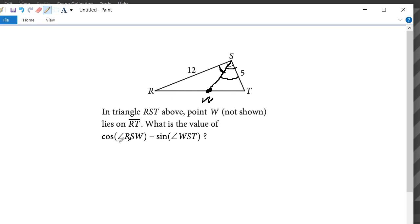So the cosine of RSW is going to be equal to the sine of WST. Therefore, the cosine of angle RSW is equal to the sine of angle WST. If we just substitute this in,